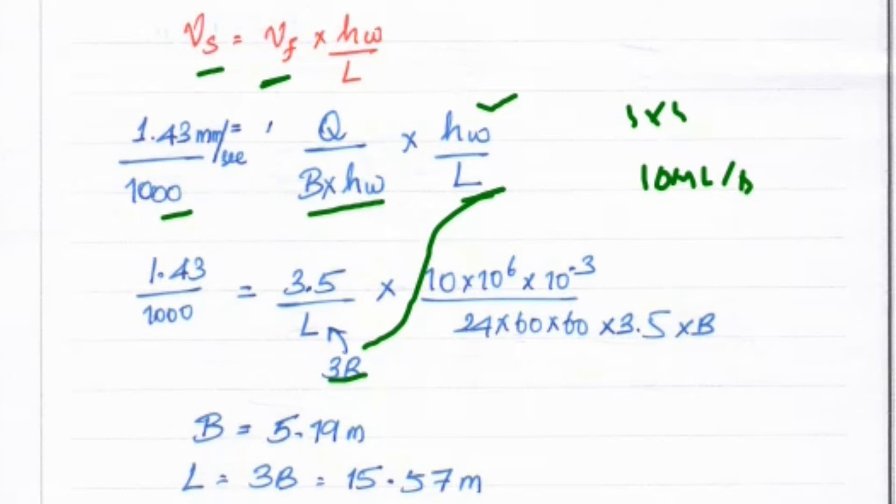We convert day into seconds: 24 × 60 × 60. Then Hw = 3.5 and B remains as B.